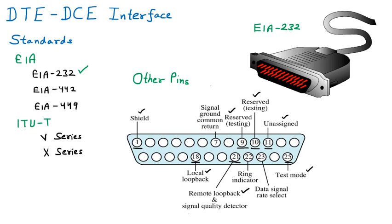Pin number 22 is the Ring Indicator. If data is moving in a ring pattern — circulating rather than moving forward — that is detected by pin number 22. Pin number 23 is the Data Signal Rate Select — if you want to send data at a specific speed, you use pin number 23 to select the data signal rate.